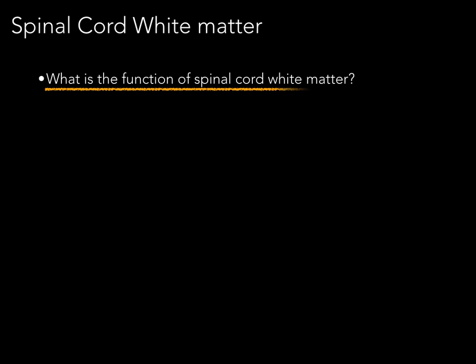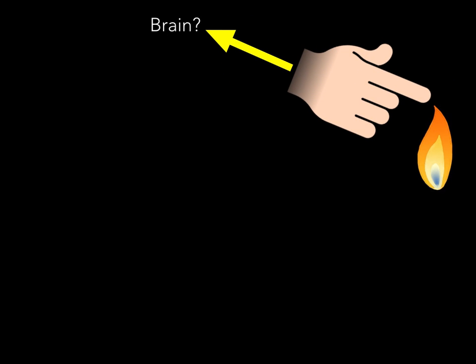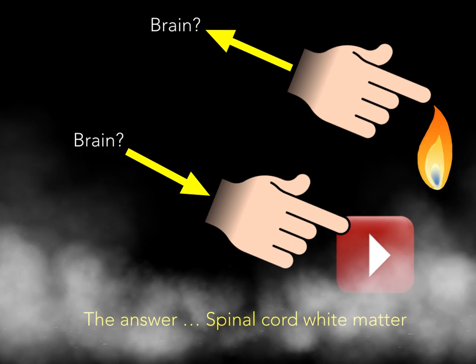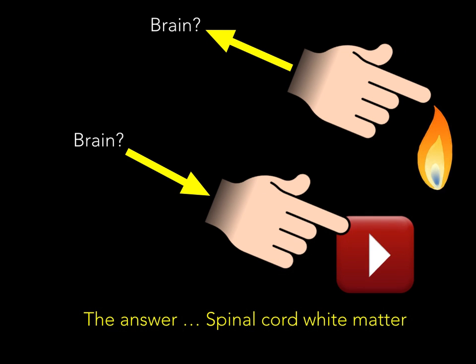What is the function of spinal cord white matter? Well, here we have a flame, and if you touch that flame, you'll pull your finger away. But how do we get that information to your brain to tell you to move your finger away? And how does your brain then tell your finger to press the play button on your DVD player? The answer: spinal cord white matter.